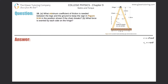Number 15, letter a: what minimum coefficient of friction is needed between the legs and the ground to keep the sign in the position shown if the chain breaks? Here's my picture — there's a hinge and a chain. We just did a very similar problem in number 14. So the chain breaks — if the chain breaks and this is a hinge that can freely rotate, what's going to happen to the sign? It's going to collapse. Both sides will slip out if there's no friction between the leg and the ground, and the whole thing will just fall downward.